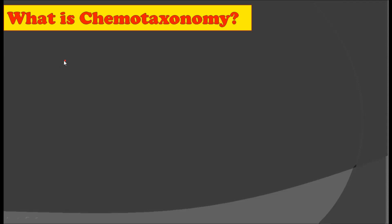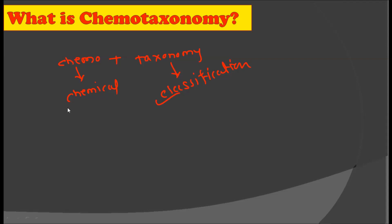What is chemotaxonomy? This word is made up of two words: chemo and taxonomy. Chemo stands for the various chemicals present in plants, and taxonomy stands for classification of plants — in general, classification of living organisms. So chemotaxonomy is nothing but the classification of organisms by using chemicals. In this case, we are using phytochemicals, that is chemicals from the plants, to classify the plant groups depending upon the chemical composition they contain.